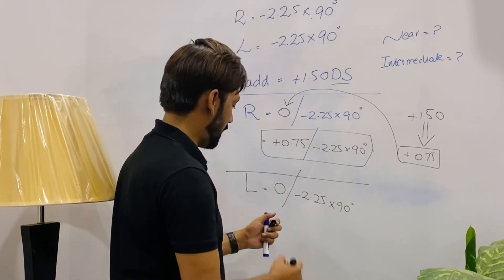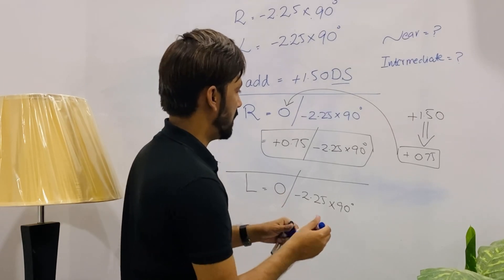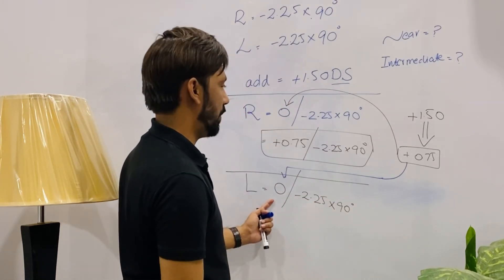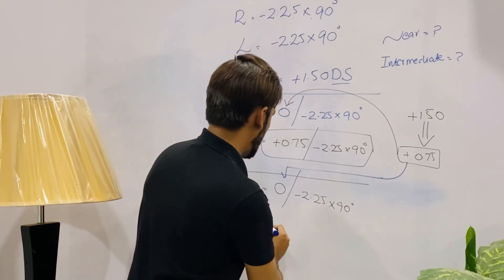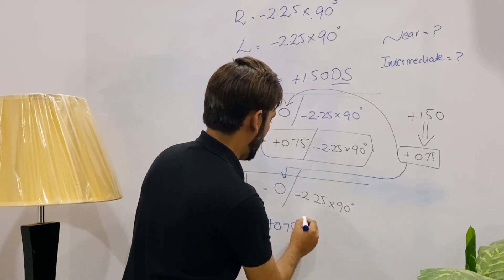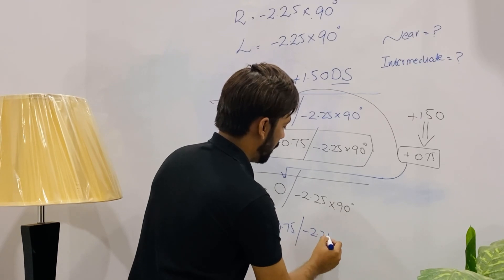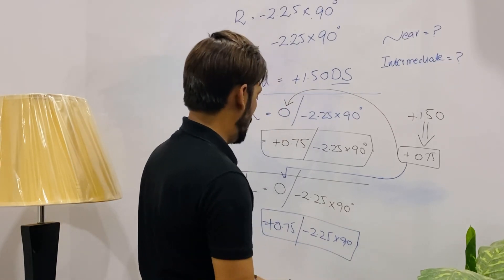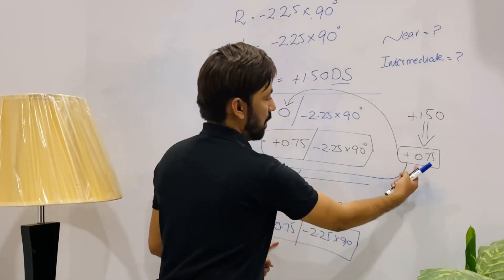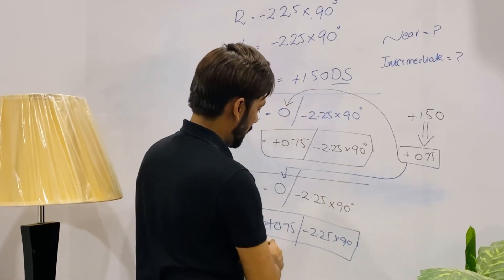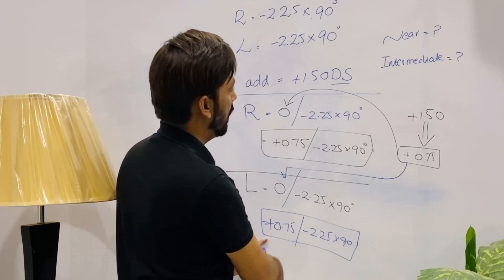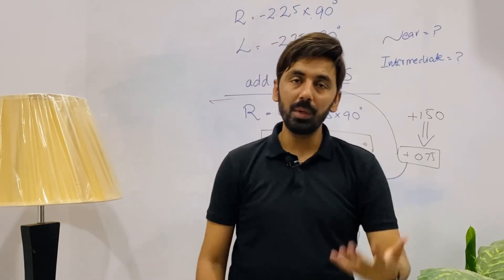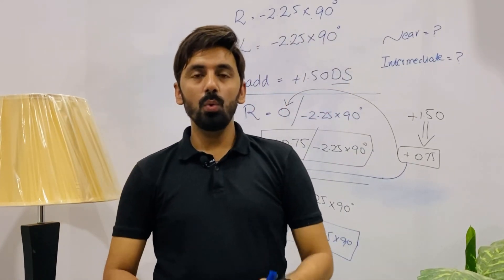For the left eye, we do the same: add half of the addition (0.75) into the spherical correction, which is 0. The result is plus 0.75. Cylinder is minus 2.25 and axis is 90 degrees — unchanged. So the intermediate prescription for the left eye is also plus 0.75 / minus 2.25 at 90 degrees. That is how we find near and intermediate prescriptions when the distance prescription has only cylindrical correction.